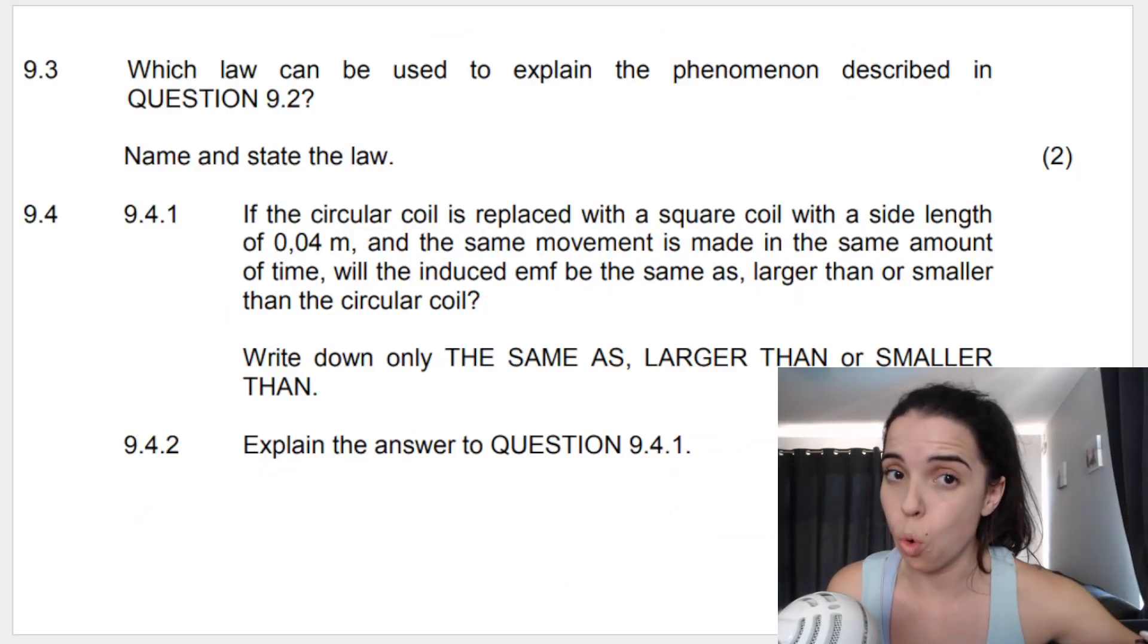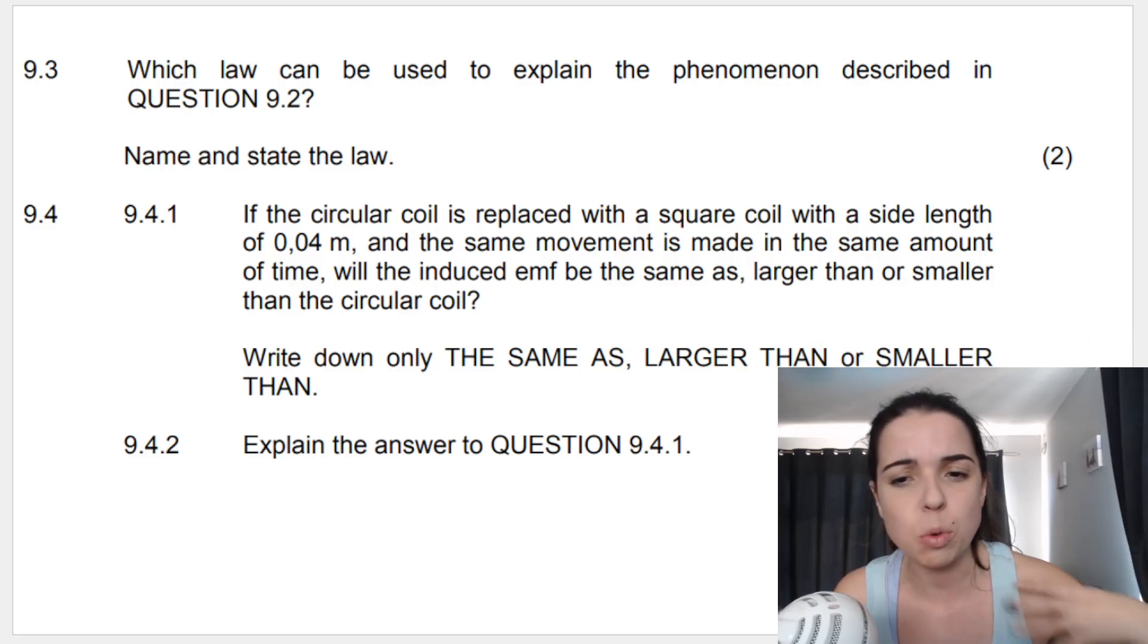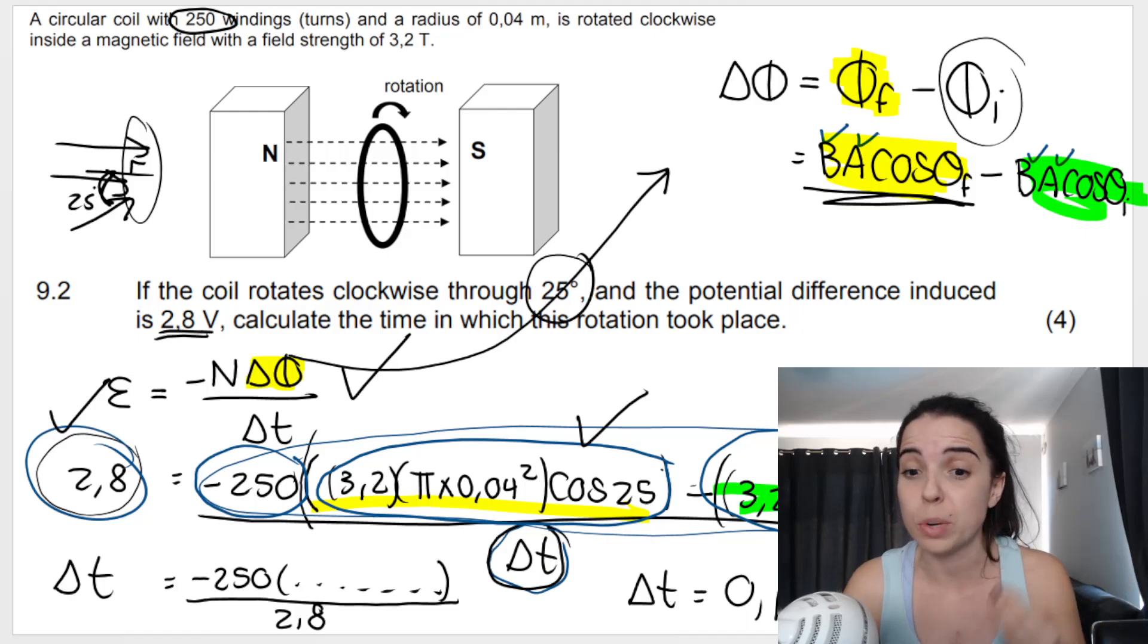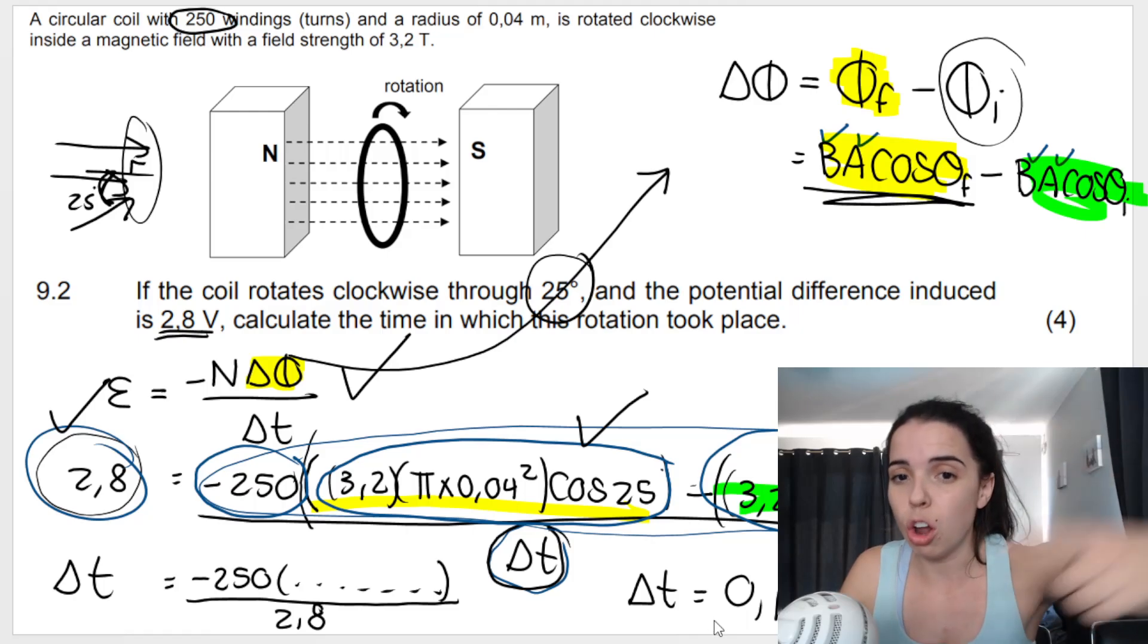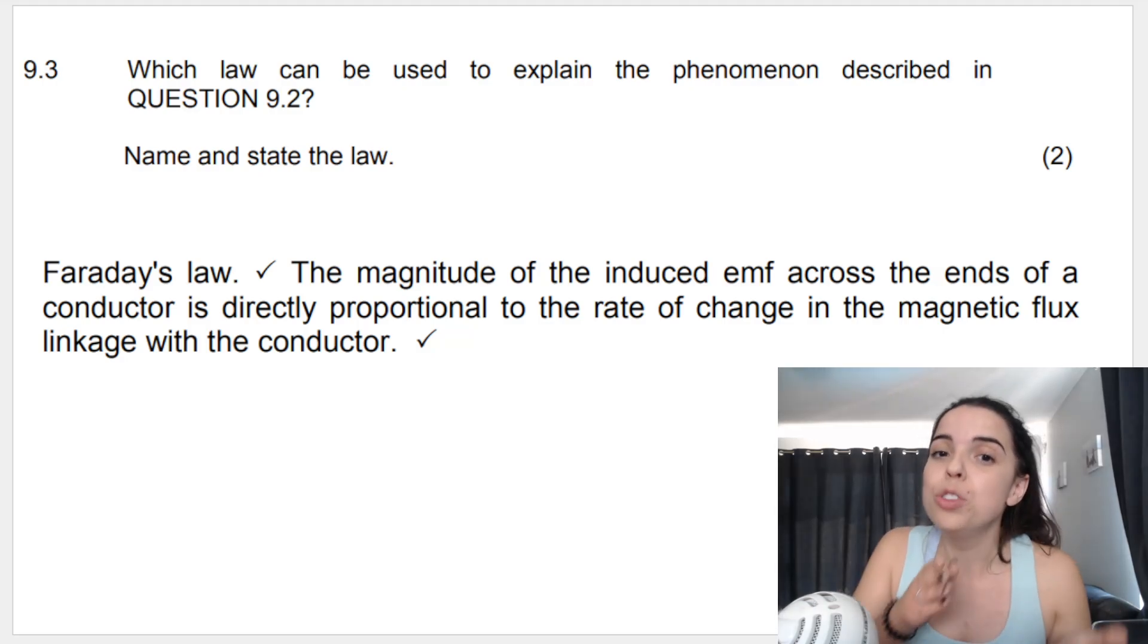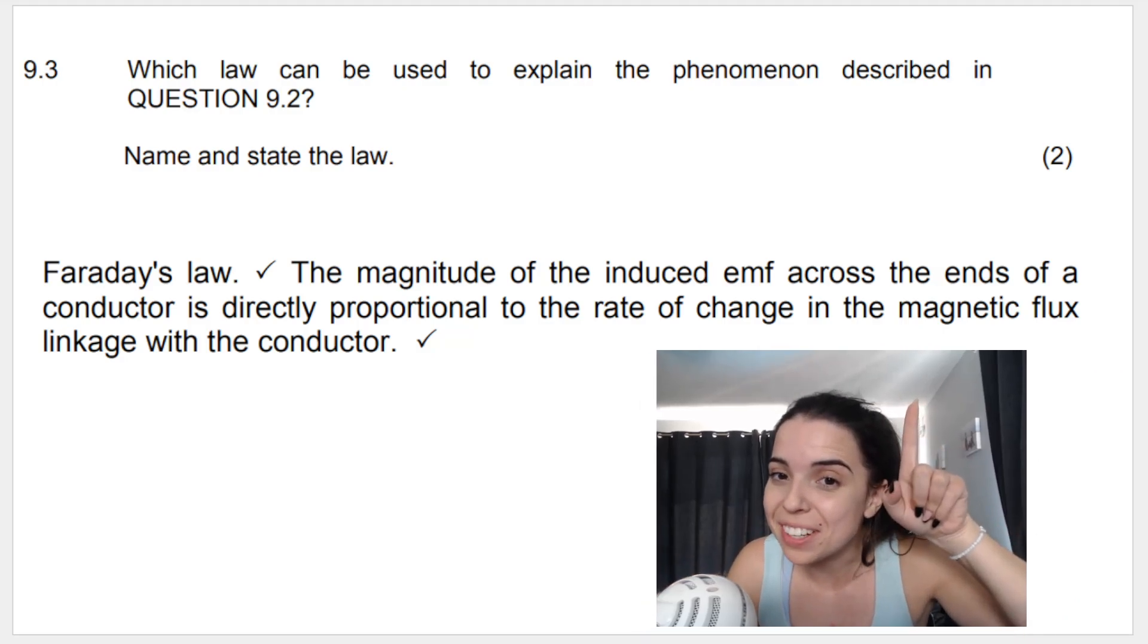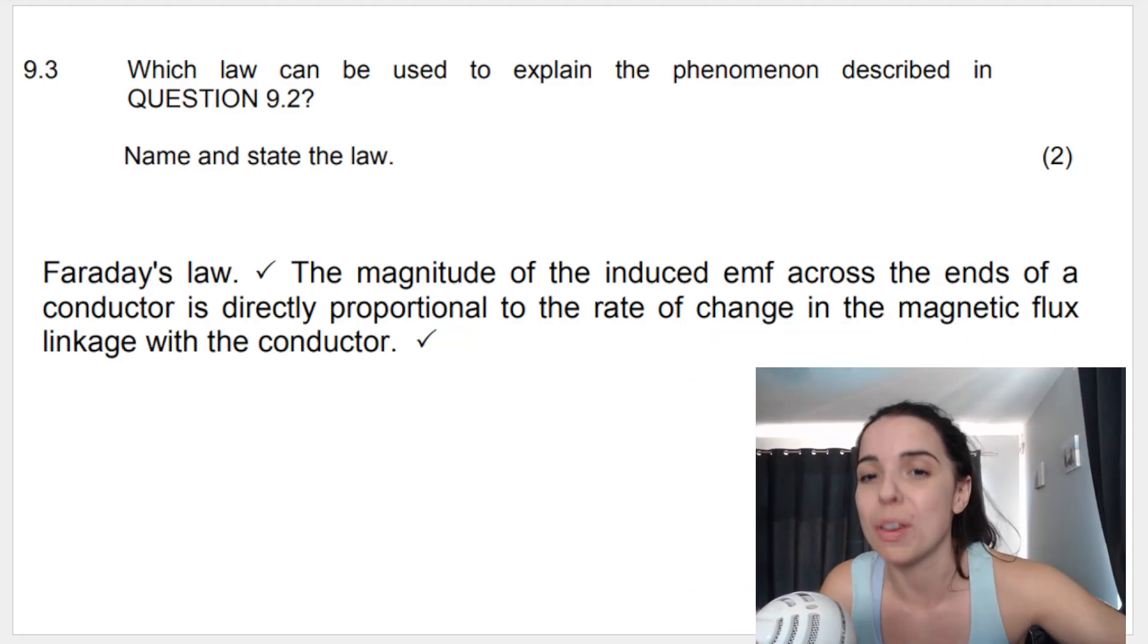9.3 asks: which law can be used to explain the phenomenon described in question 9.2? Name and state the law. What phenomenon? In 9.2, we rotate the coil clockwise, moving it relative to the magnetic field, and an EMF is induced across the ends of the conductors. This is Faraday's law: The magnitude of the induced EMF across the ends of a conductor is directly proportional to the rate of change in magnetic flux linkage with the conductor.